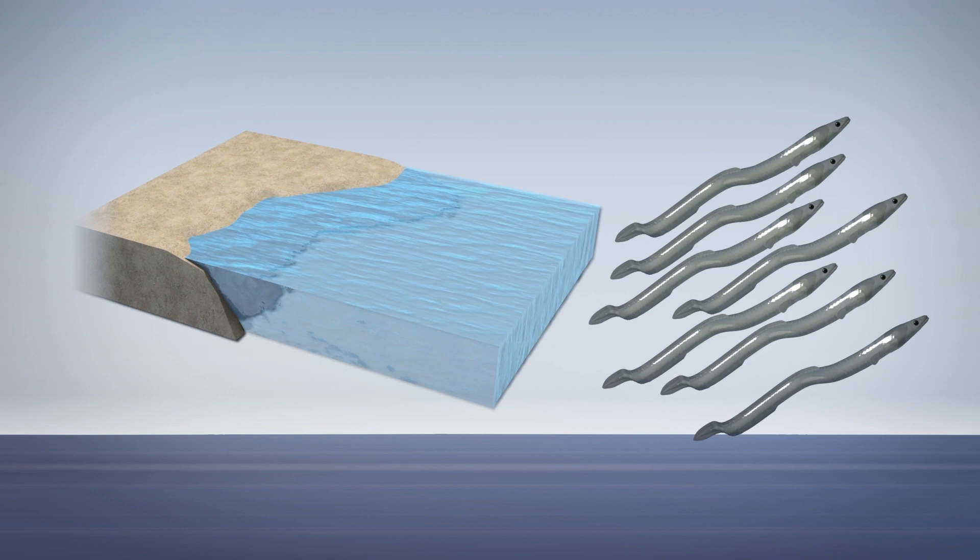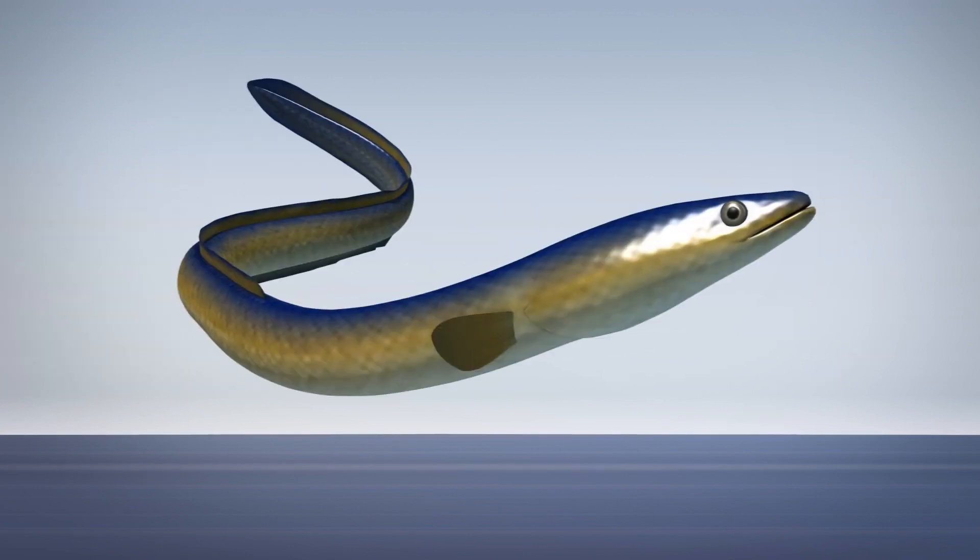Some of the eels continue to swim upstream to fresh water. Eels that get there then grow into the adult eel stage, which is yellow in color. These eventually become sexually mature silver eels.